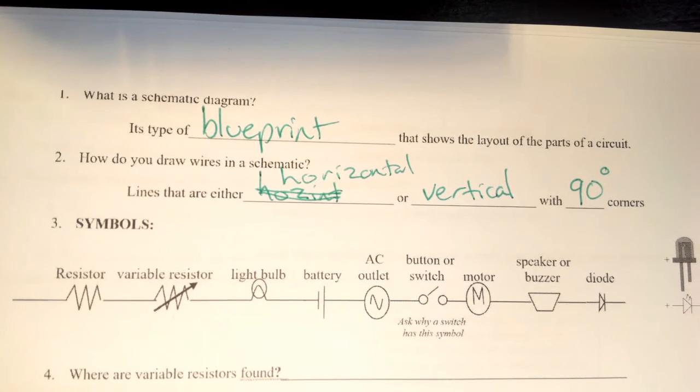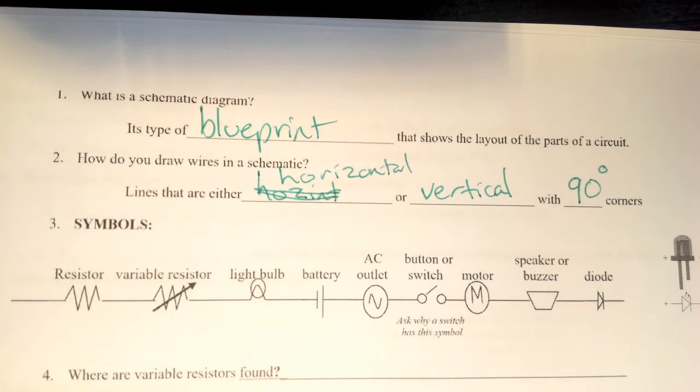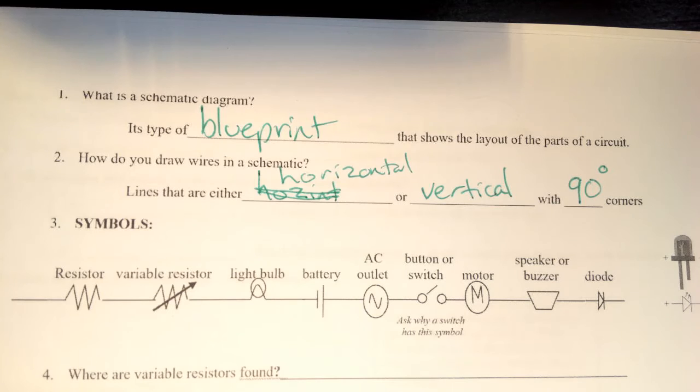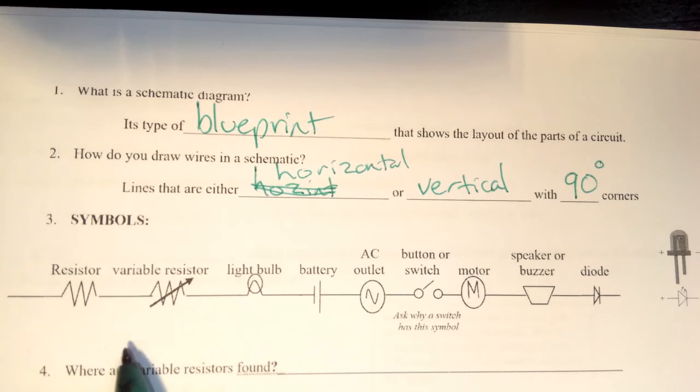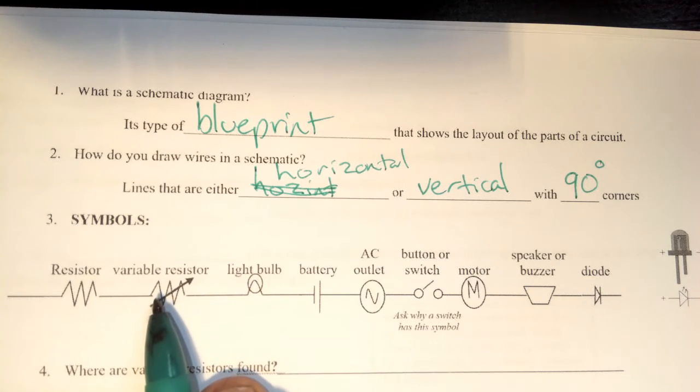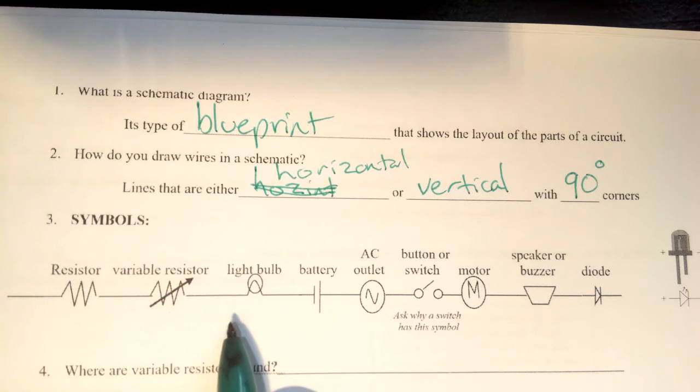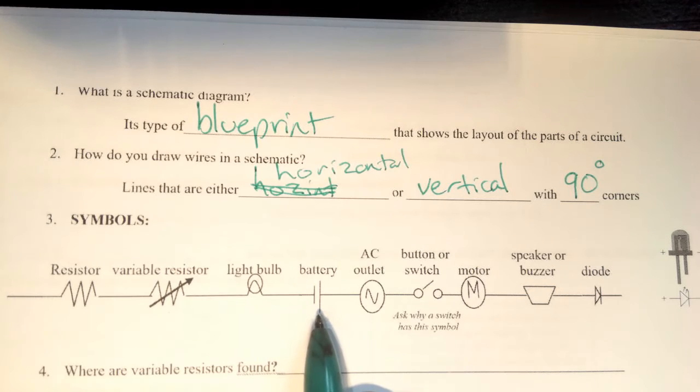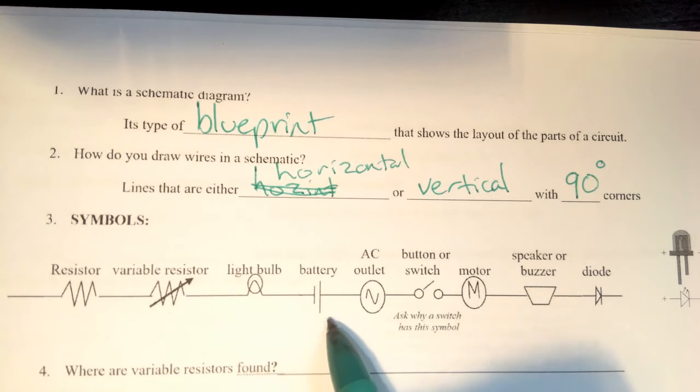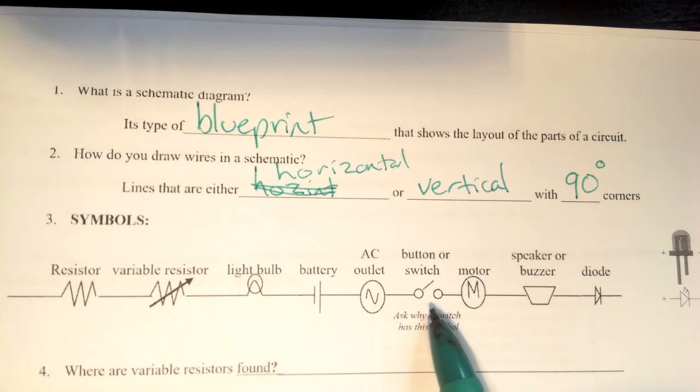Then we have symbols for every part of the circuit. Just like an architect for a building will have different symbols for doors and windows and outlets and ceiling fans, an electrical engineer will have different symbols for different kinds of light bulbs and motors and capacitors. A variable resistor, that's going to be a slide or a knob that you turn. Different kinds of light bulbs might have the exact same symbol. Different kinds of batteries will have the same symbol, they might have the voltage labeled next to them.